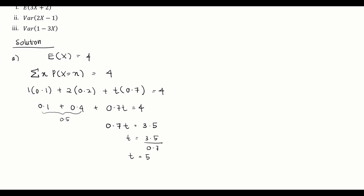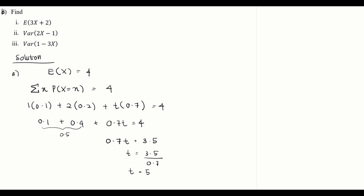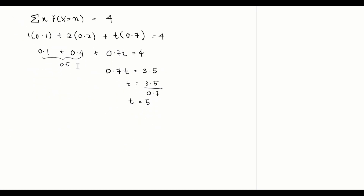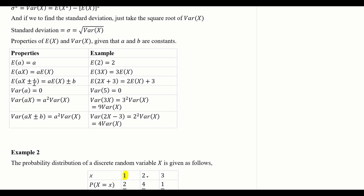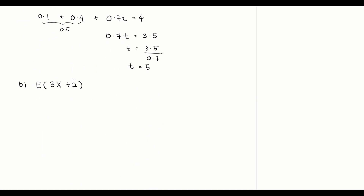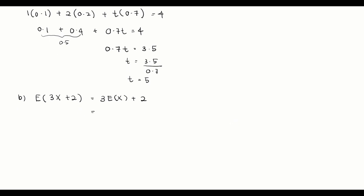Now for the second part of the question, we need to calculate E(3x + 2), the variance of 2x − 1, and the variance of 1 − 3x. For E(3x + 2), we use the property that E(ax + b) = a·E(x) + b. So E(3x + 2) = 3·E(X) + 2. We already know E(X) = 4, so this is 3 × 4 + 2 = 12 + 2.